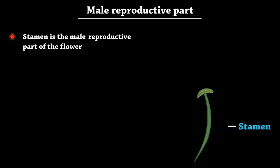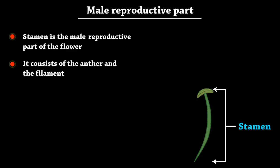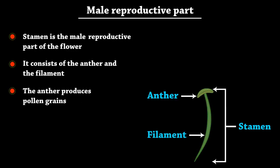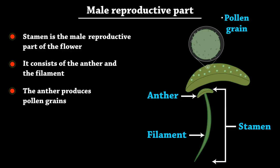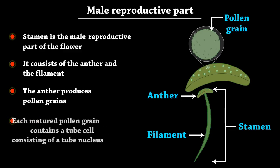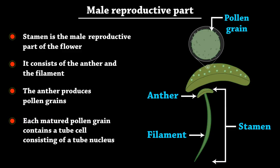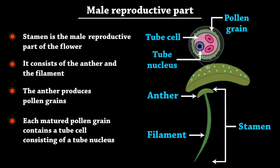Stamen is the male reproductive part of the flower. It consists of the anther and the filament. The anther produces pollen grains. Each matured pollen grain contains a tube cell consisting of a tube nucleus and two male gametes.